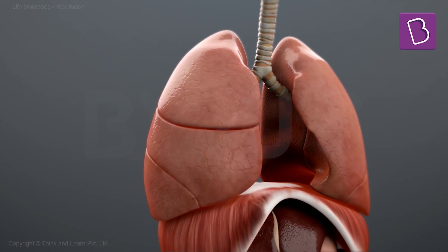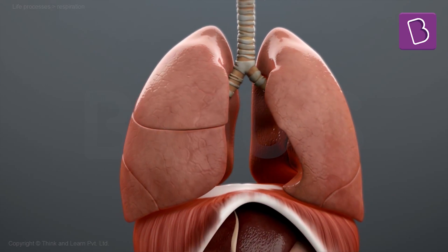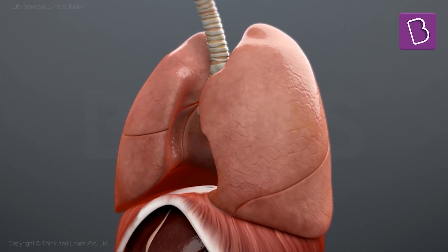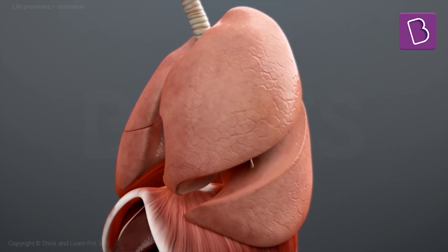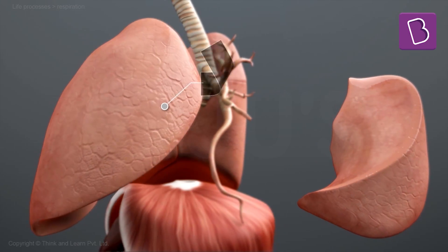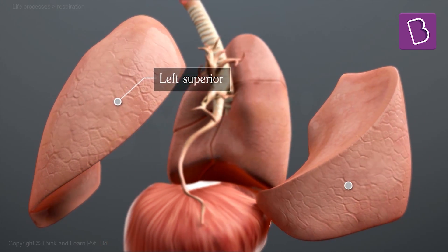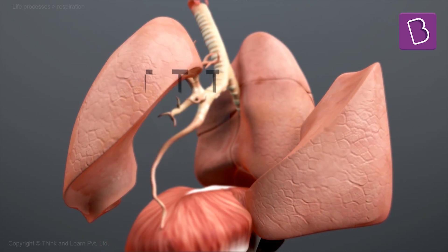The left lung, which is smaller to accommodate the heart, has only two lobes: the left superior and the left inferior lobe.